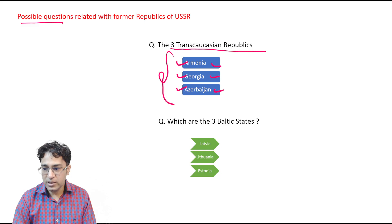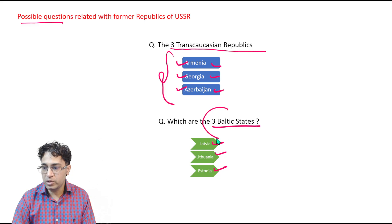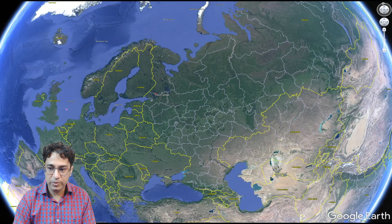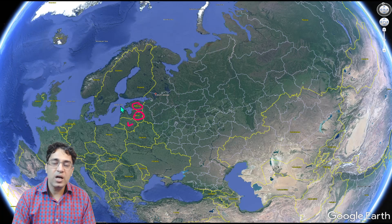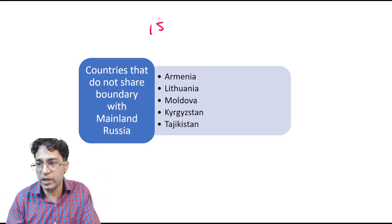Now let us look at the three Baltic States. Latvia, Lithuania, and Estonia are called the three Baltic States. On the map, this is Estonia, this is Latvia, and this is Lithuania. These are called the Baltic States because they lie close to the Baltic Sea.